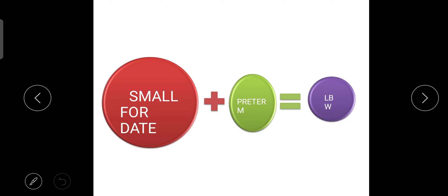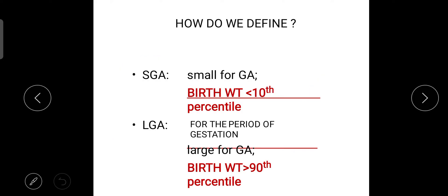How do we define? Small for gestational age equals birth weight is below 10 percentile, and large for gestational age, for the period of gestation, birth weight will be more than 90 percentile.